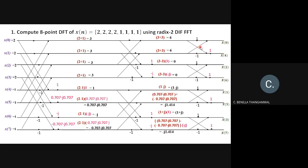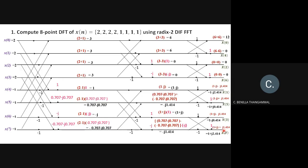Stage 3 calculations — all twiddle factors are 1, so calculations are straightforward. Pairs: (6,6): 6+6=12, 6−6=0. (0,0): 0+0=0, 0−0=0. (1−j, −j1.414): sum=1−j2.414, difference=1+j0.414. (1+j, −j1.414): sum=1+j−j1.414=1−j0.414, difference=1+j+j1.414=1+j2.414. Final outputs in bit-reverse order: 12, 0, 0, 0, 1−j2.414, 1+j0.414, 1−j0.414, 1+j2.414.